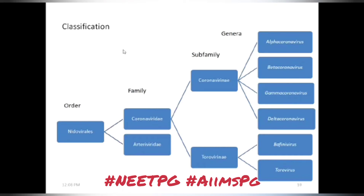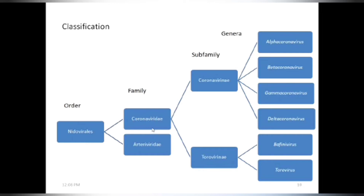Regarding classification, the order is Nidovirales, which results in two families: Coronaviridae and Arteriviridae. Coronaviridae is further classified into sub-families Coronavirinae and Torovirinae. Coronavirinae is further divided into four genera: alpha, beta, gamma, and delta. Torovirinae consists of Baffinivirus and Torovirus.